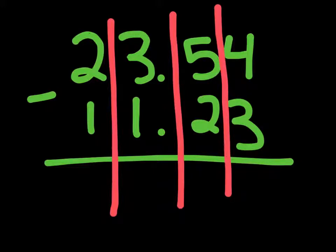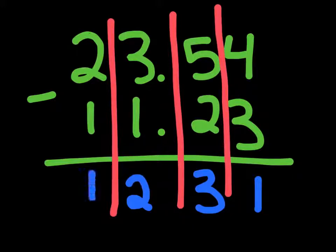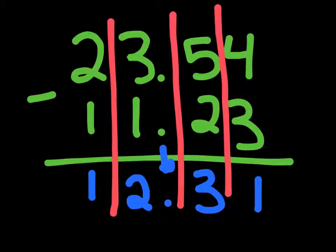4 minus 3 is 1, 5 minus 2 is 3, 3 minus 1 is 2, and 2 minus 1 is 1. Then we bring down our decimal point, and our answer to 223.54 minus 11.23 is 212.31.